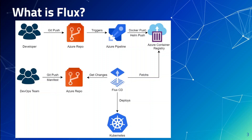The DevOps team is building the Kubernetes resources which use the container images pushed by the developers. As soon as the DevOps team pushes those Kubernetes resource manifests, Flux picks those up and pushes them to the Kubernetes cluster. So both of these pipelines work hand in hand — developers building container images and DevOps building Kubernetes resources like deployments and pods.